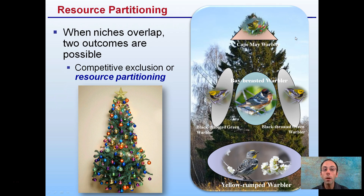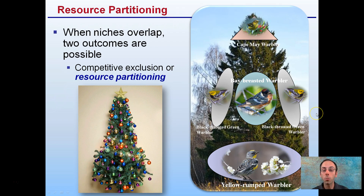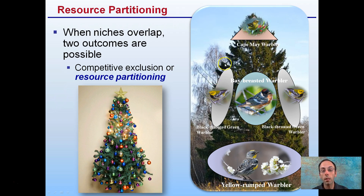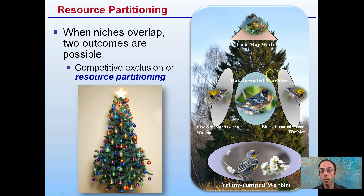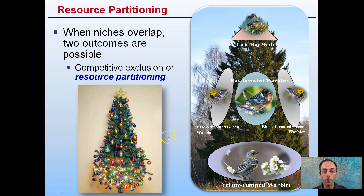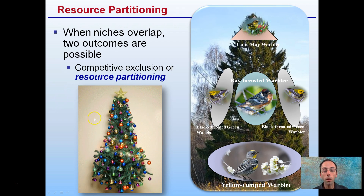Let's look specifically at resource partitioning. This is when niches overlap and two outcomes are possible — one being competitive exclusion or resource partitioning. We have a tree here with different bird species occupying different portions. Some are at the very top or apical meristem of the tree, some closer to the ground, some in the midsection toward the ends of the branches, and some in the center portion of the tree. All these warbler species occupy the same tree, but because of resource partitioning they occupy different specific niches or areas within the tree, allowing different species to coexist without overlapping any particular physical space or habitat.